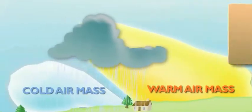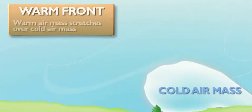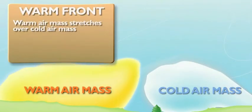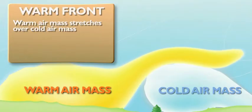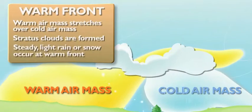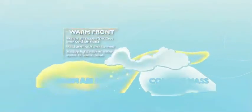What happens at a warm front? A warm front happens when a warm air mass catches up with a cold air mass and slowly climbs up and over it. As the warm air mass passes over the cold air, long, thin stratus clouds stretch out across the sky. A warm front can cause rain and snow too, but it's light and steady, not heavy and stormy like a cold front's weather.